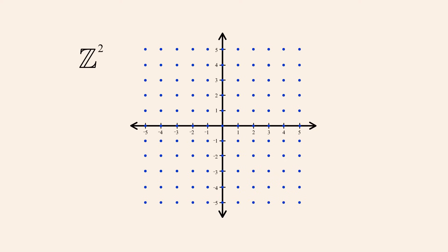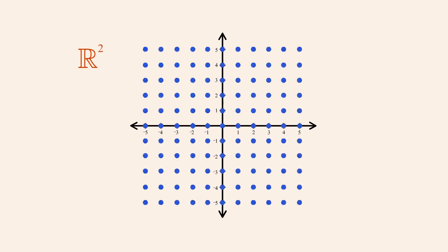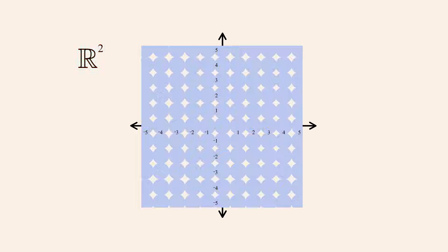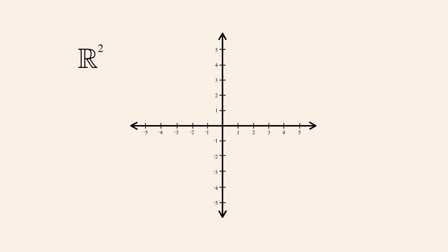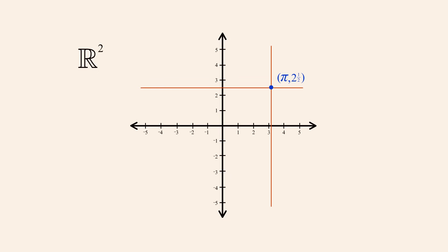Now, if instead of using the set of integers Z we form the Cartesian product of the set of real numbers R with itself, we create a continuum of points which completely fill the plane. Then, every ordered pair of two real numbers corresponds to a unique point in this two-dimensional space.